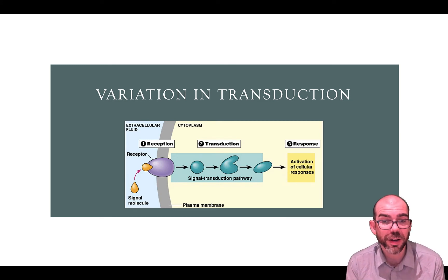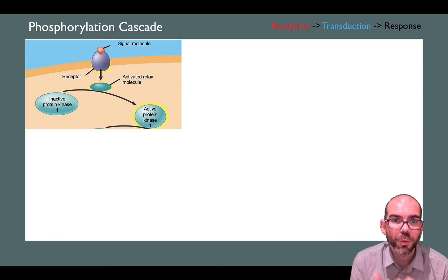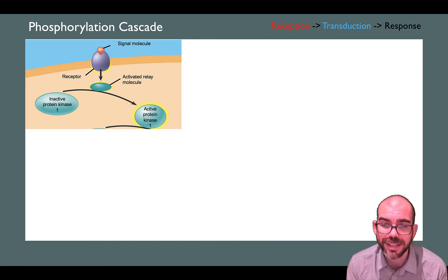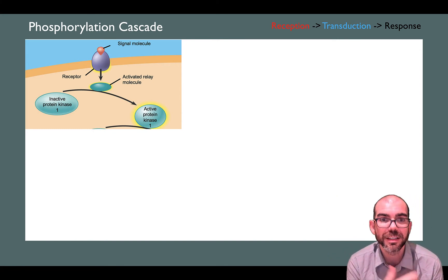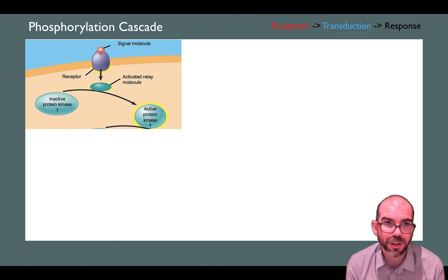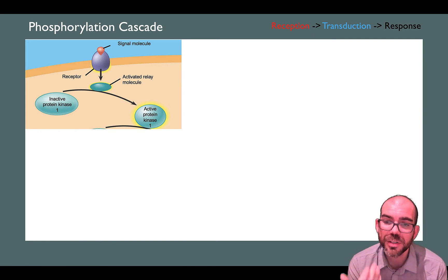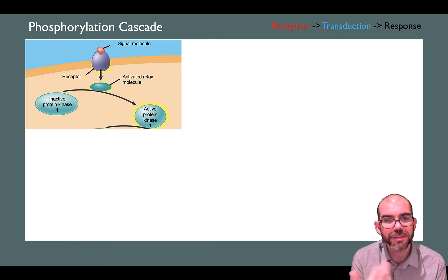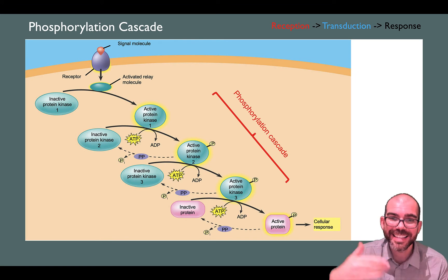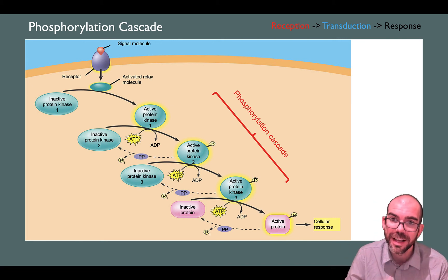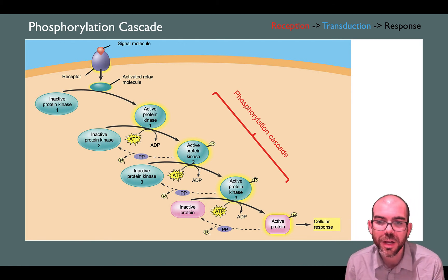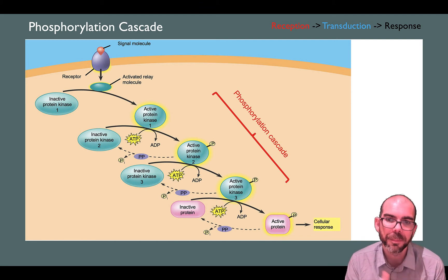Let's now look at variation in transduction, because transduction can occur in a variety of ways. One of the most common pathways is something called a phosphorylation cascade. Phosphorylation is just adding or removing phosphates. For a cascade, think of something like a waterfall — one thing causing another causing another. In this image, the ligand has been received. For transduction, an activated relay molecule causes an inactive protein kinase to become active. A kinase is a protein that phosphorylates — so anytime you see kinase, anticipate a phosphorylation. Once the first protein kinase is activated, you have a cascade: active kinase 1 activates kinase 2, activates kinase 3, and so on. This cascade of phosphorylations ultimately leads to an active protein that triggers a cellular response.